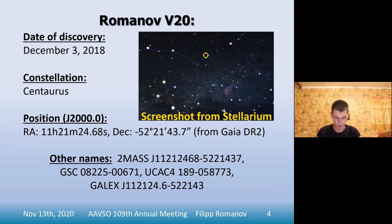On the fourth slide you can see information about this variable star. It was registered in the VSX under the name Romanov V20. Romanov is my last name. V is an abbreviation for the word variable, and 20 is the ordinal number of stars in the VSX with this designation.